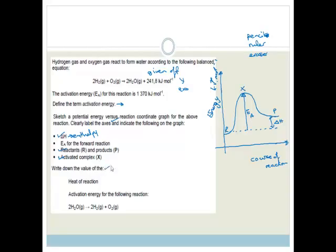Now it says write down the value of the heat of the reaction. That's pretty easy. The heat of the reaction is 241.8 kilojoules per mole.